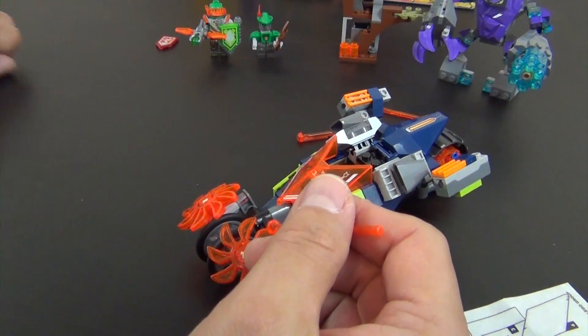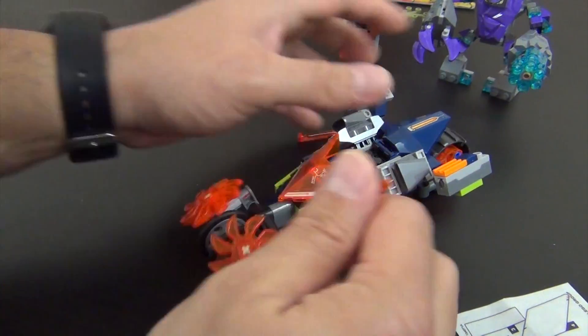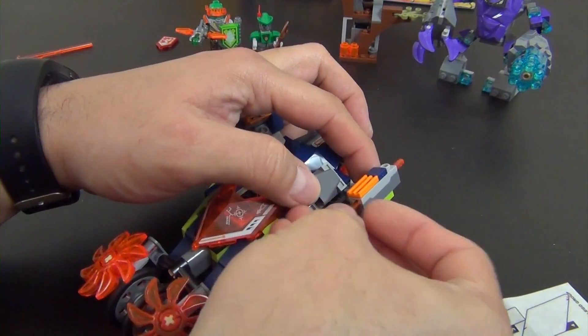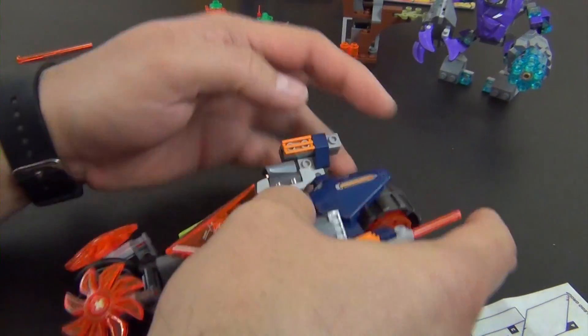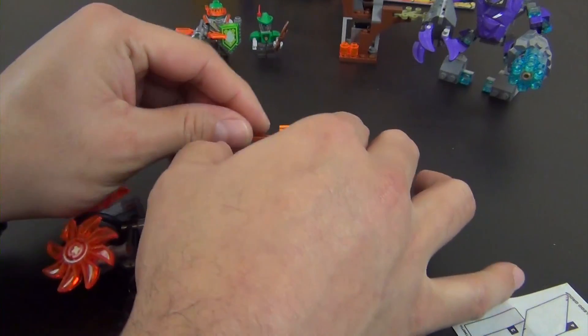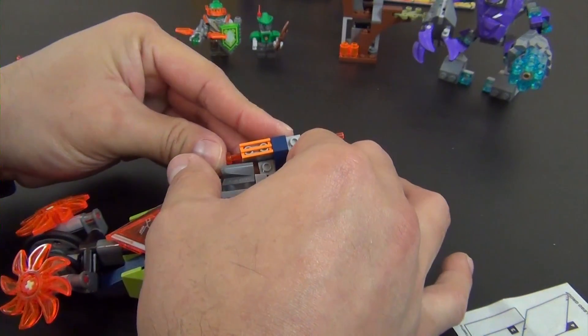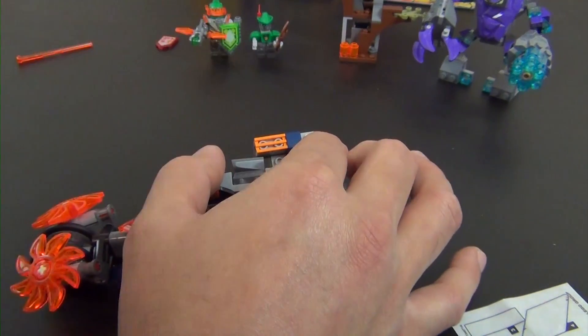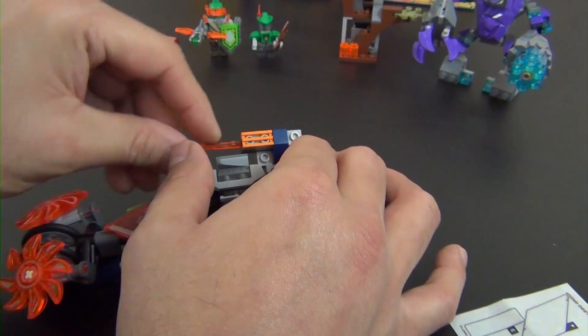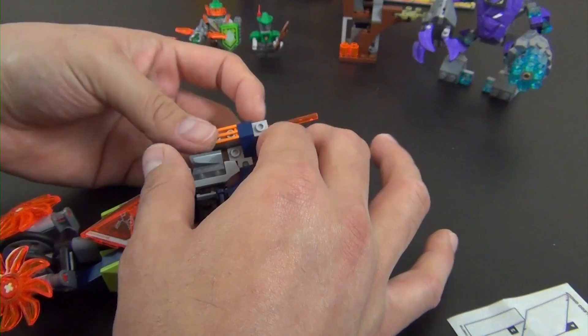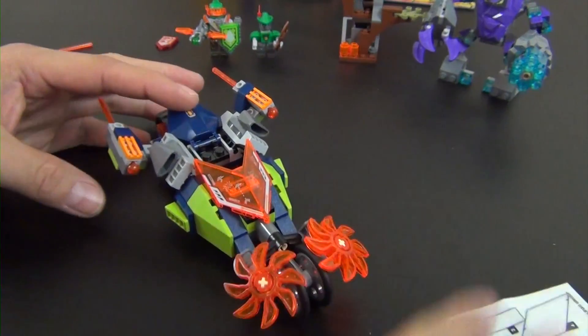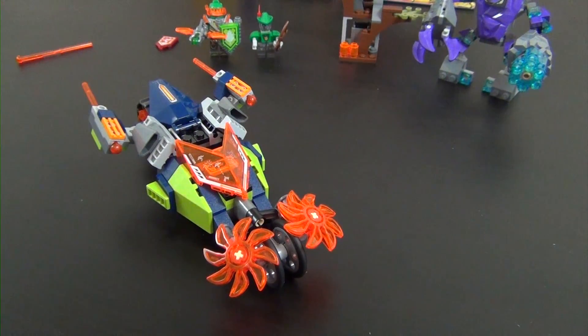Then the last thing we've got is our spring-loaded flick fire missiles. These obviously load into those launcher bricks. If I can push it in there. There we go. And it's good to go. So that completes the build of the stone destroyer.